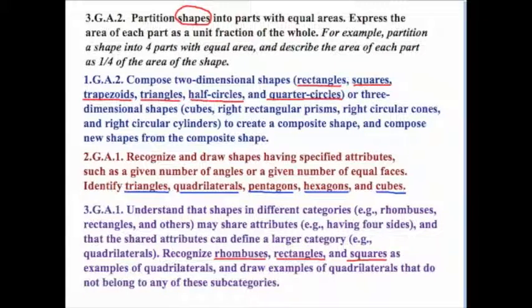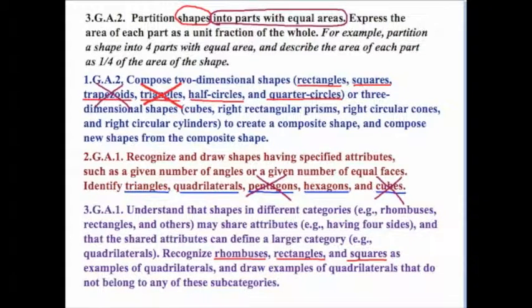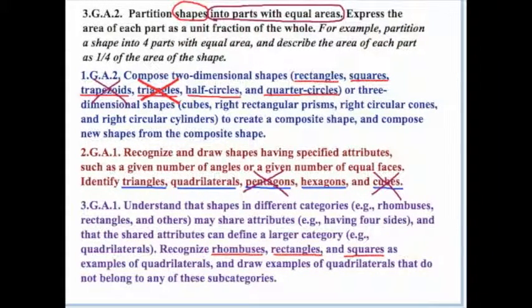If we look at the big picture and consider all three of these together, what shapes should we use for standard 3.G.A.2? Keep in mind that we're talking about parts with equal areas. Cubes should be automatically eliminated because they're three-dimensional, not two-dimensional. Trapezoids and pentagons would be very difficult to divide up into equal parts, so we should go ahead and eliminate those.